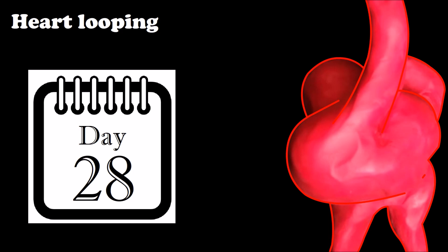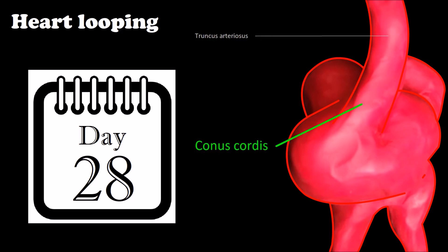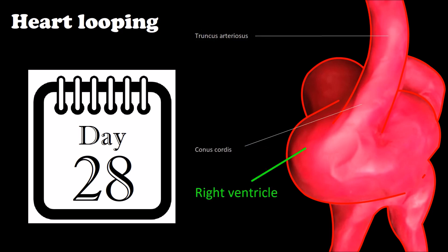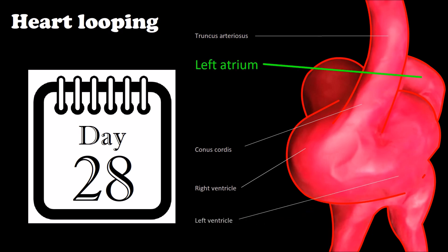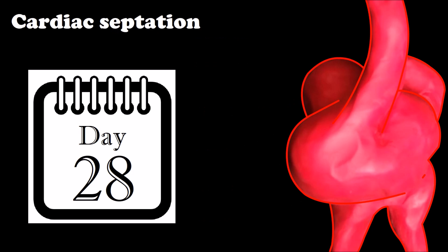Examples of these cardiovascular structures are truncus arteriosus, conus cordis, future right ventricle, future left ventricle, future left atrium, and future right atrium.